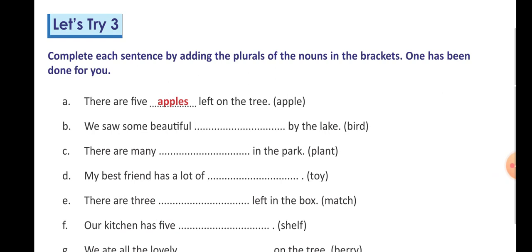Okay, so now I am going to tell you the answers of Let's Try 3. Complete each sentence by adding the plurals of the noun in the brackets. First number has been done for you: there are five apples left on the tree.